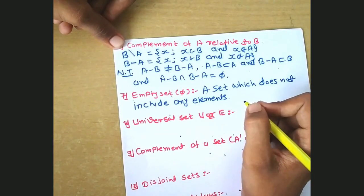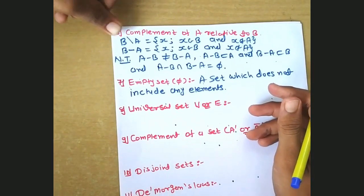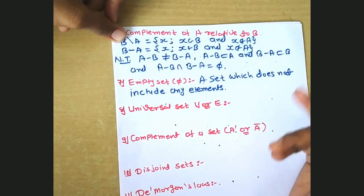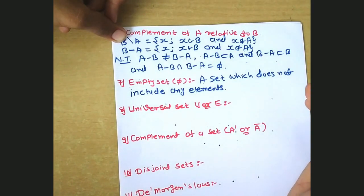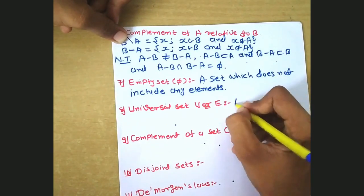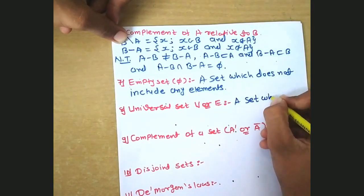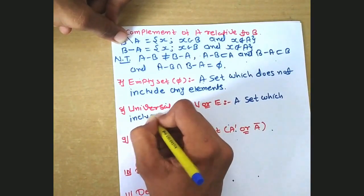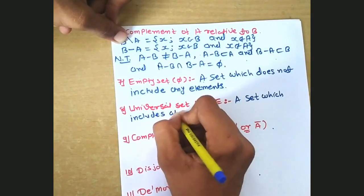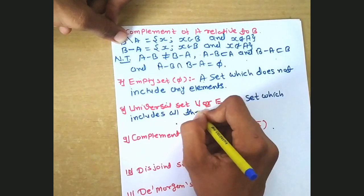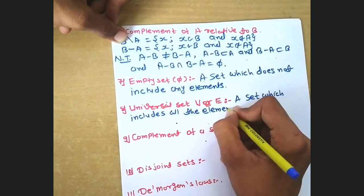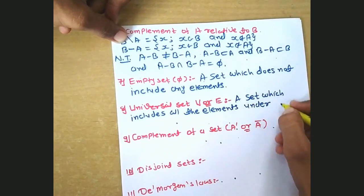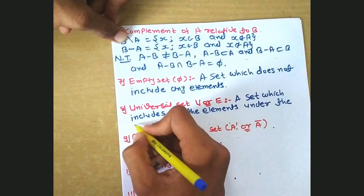Next, the universal set — denoted by U or sometimes E. It is a set which includes all the elements under the discussion.